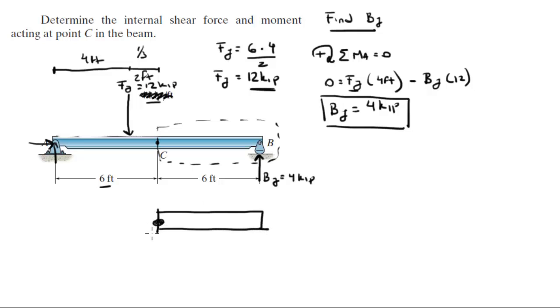This right here is C. So let's say this is the normal NC, let's say this is the shear VC, and let's say this is the moment MC. And we still have BY at 4 kip.